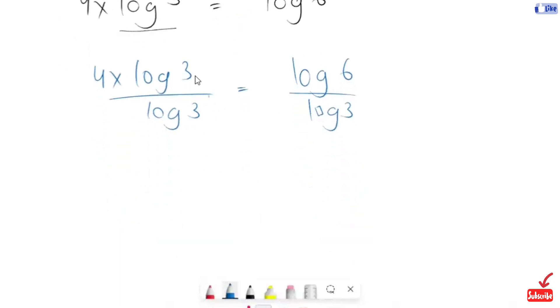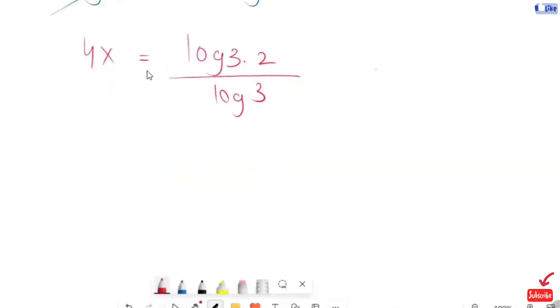Now, the remaining expression is 4x is equals to log of 6 over log of 3. We need to write this as log of 3 times 2 over log of 3. We have the logarithm rule that log of a times b equals log of a plus log of b.